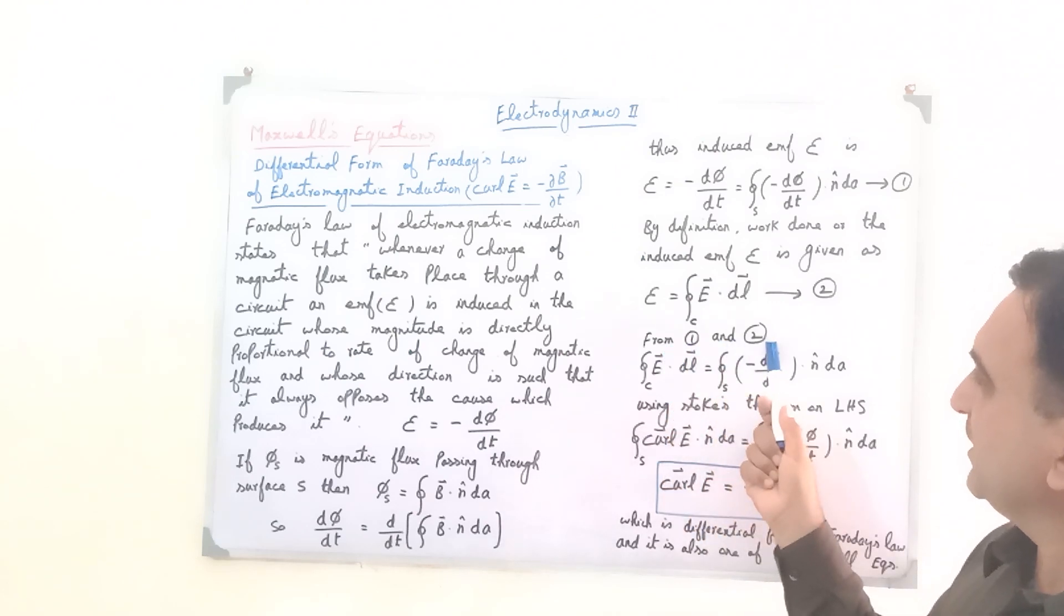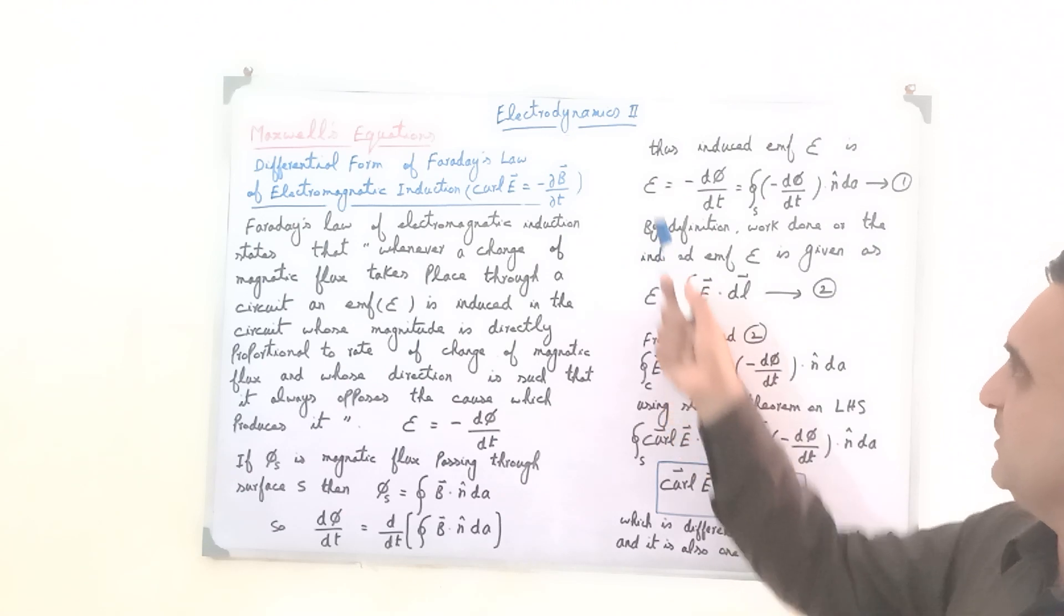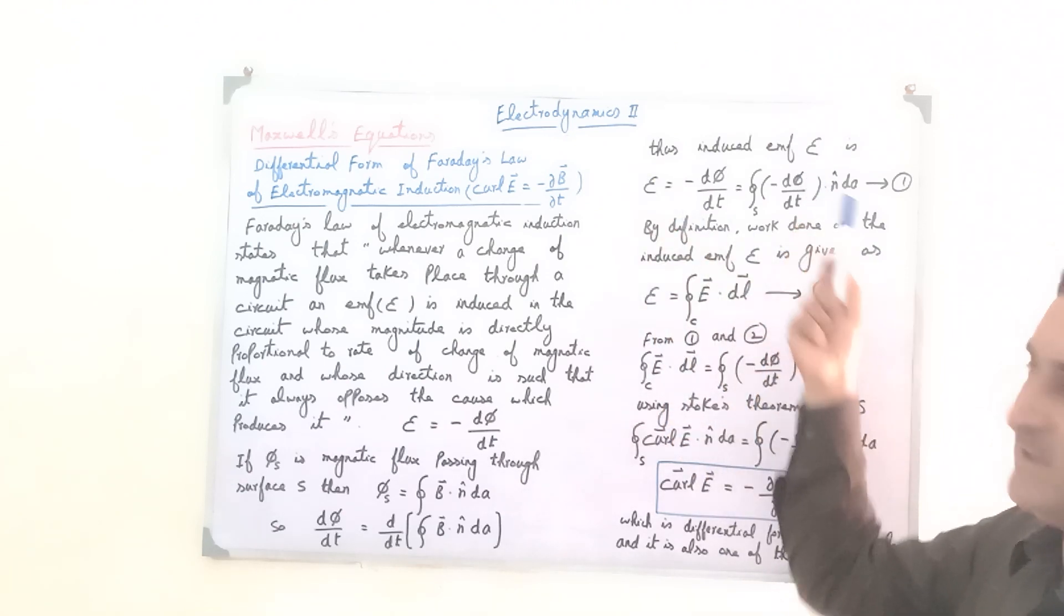From equation number 1 and 2, since the left hand sides of these two are equal, the right hand sides are also equal.